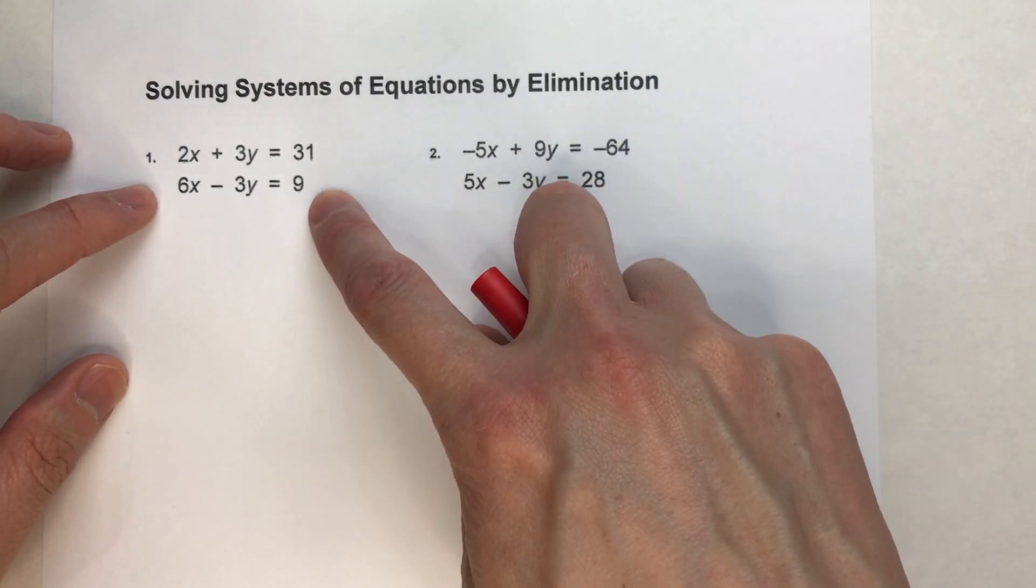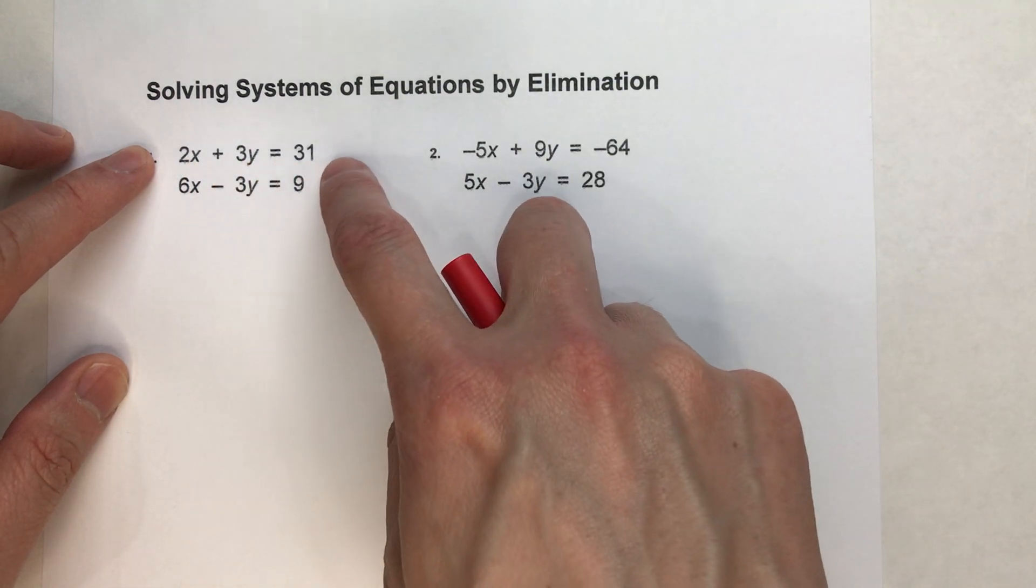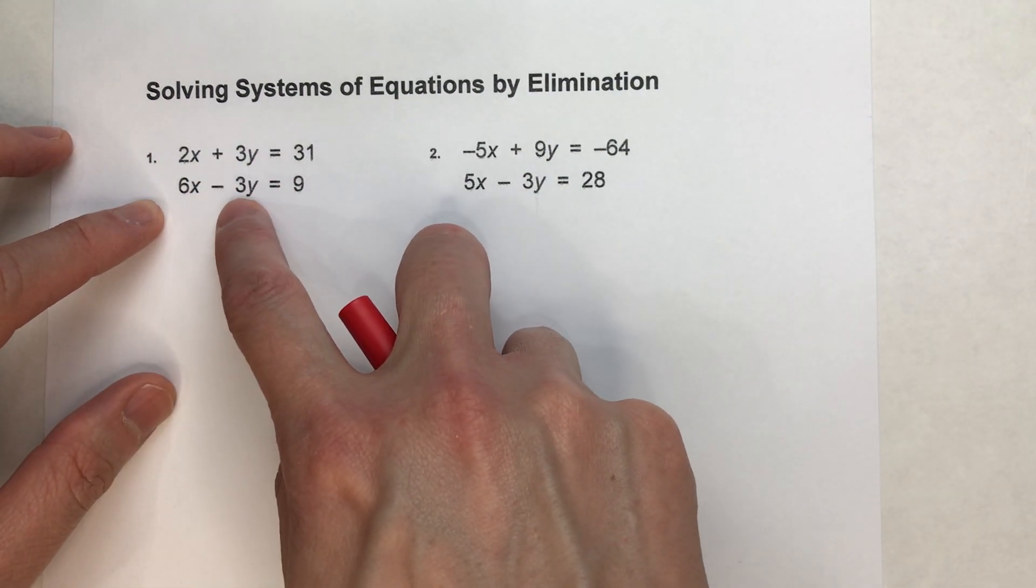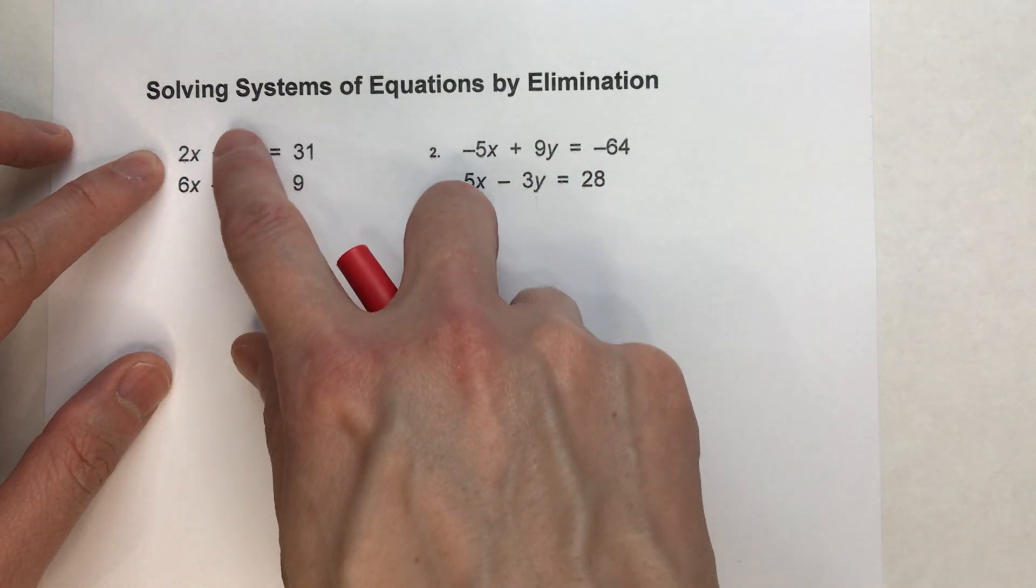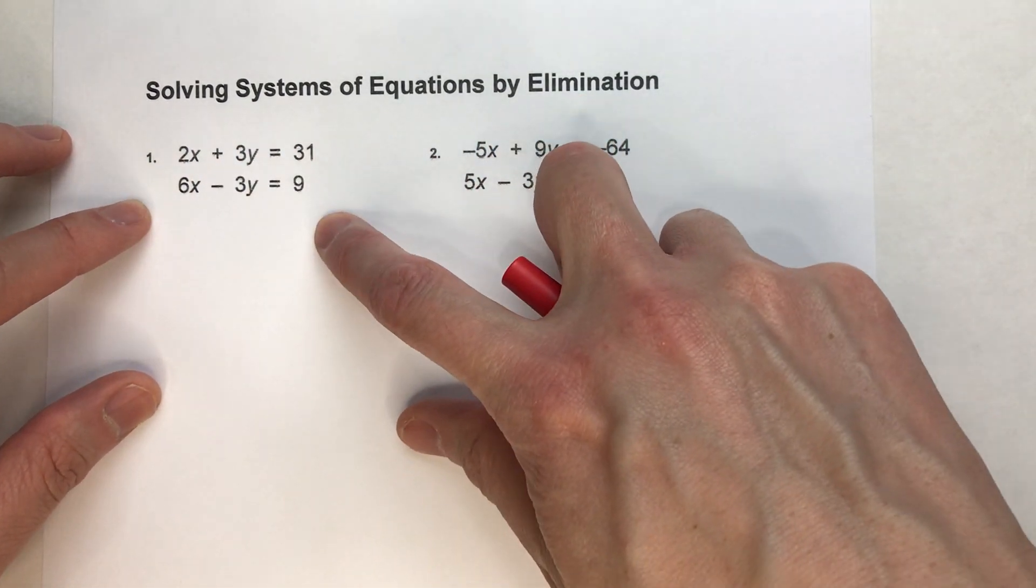If you look at this first system of equations, we've got 2x plus 3y equals 31 and 6x minus 3y equals 9. Notice that they're both in the same format where we've got the x's and y's on one side and a number on the other side.